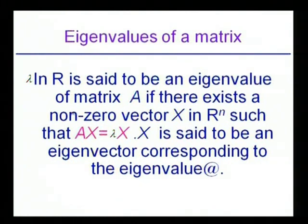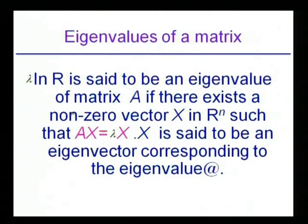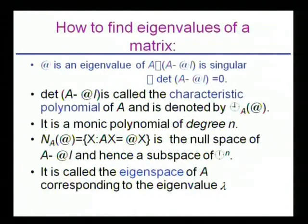Lambda belonging to ℝ is said to be an eigenvalue if there is a non-zero vector x such that Ax = lambda·x. x is said to be an eigenvector corresponding to the eigenvalue lambda.